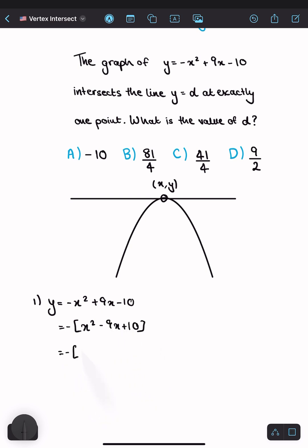Completing the square: -(x - 9/2)² + (9/2)² + 10, which becomes -(x - 9/2)² + 81/4 + 10. Expanding and simplifying gives -(x - 9/2)² + 41/4.